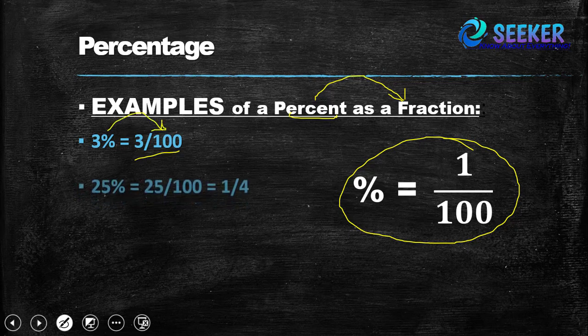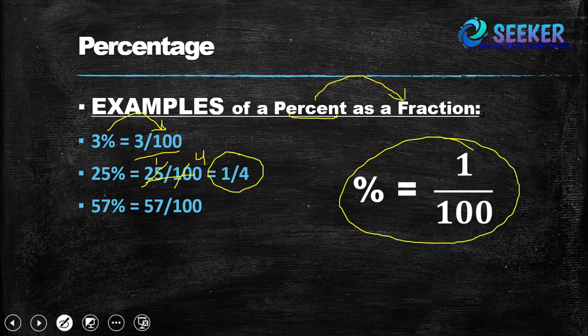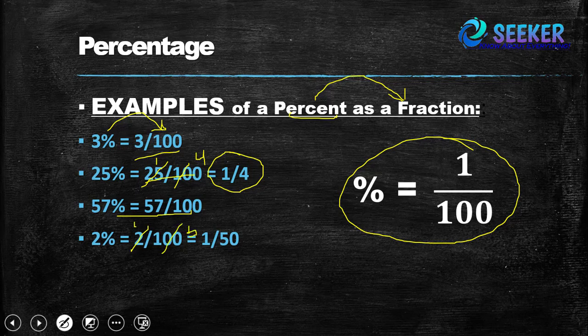25% is equal to 25 divided by 100, which comes out to be 1 by 4, because 25 divides both — 25 goes into 25 once and into 100 four times, so the answer is 1 by 4. Similarly, 57% is equal to 57 divided by 100. And 2% is equal to 2 by 100, which comes out to be 1 by 50.